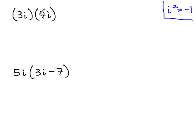So for example, when we have 3i times 7i, we treat that like multiplying 3x times 7x. Multiply the numbers, and then use your exponents. 3 times 7 is 21. i times i is i squared.